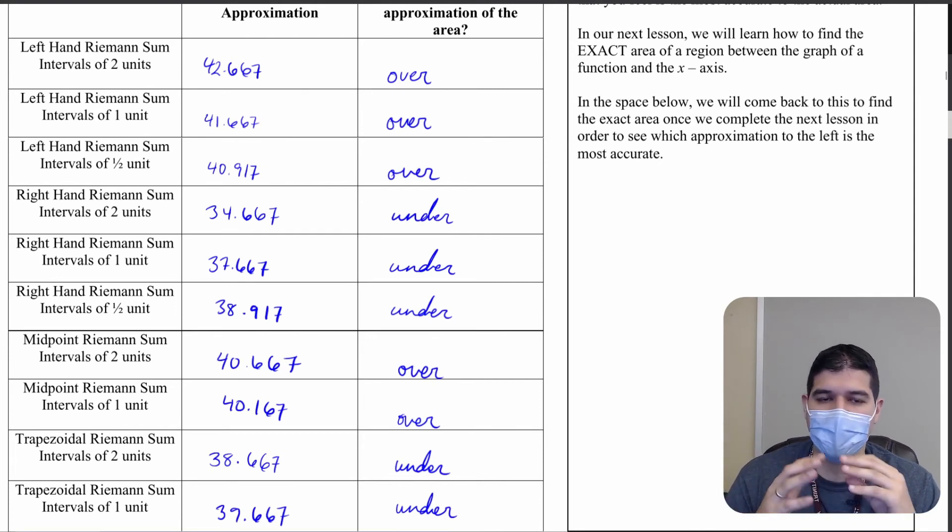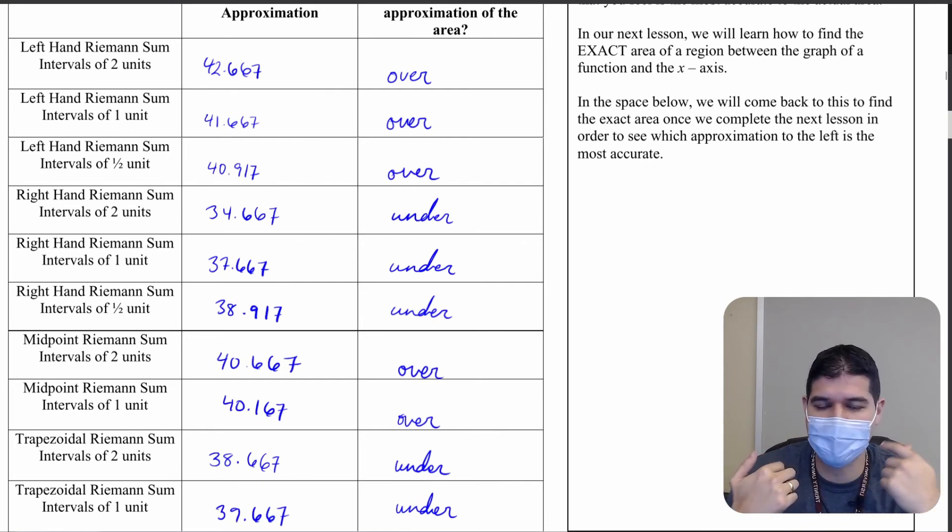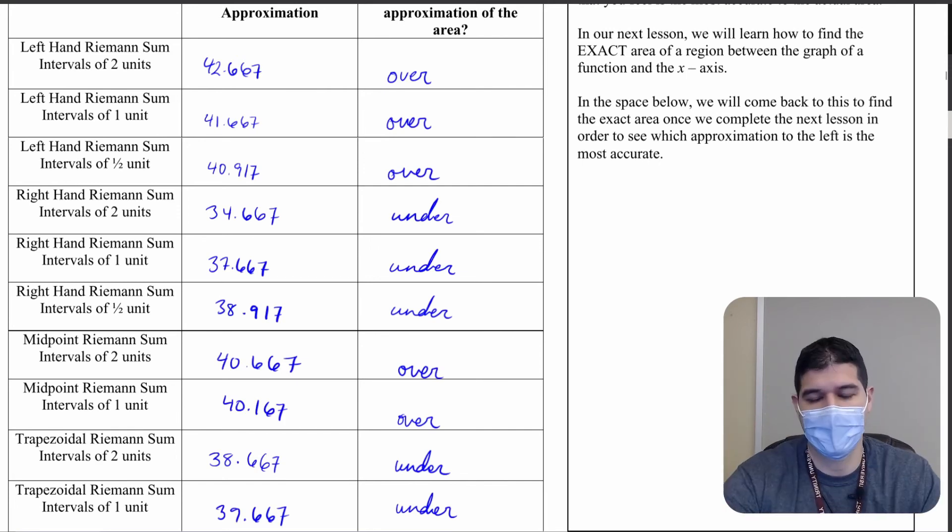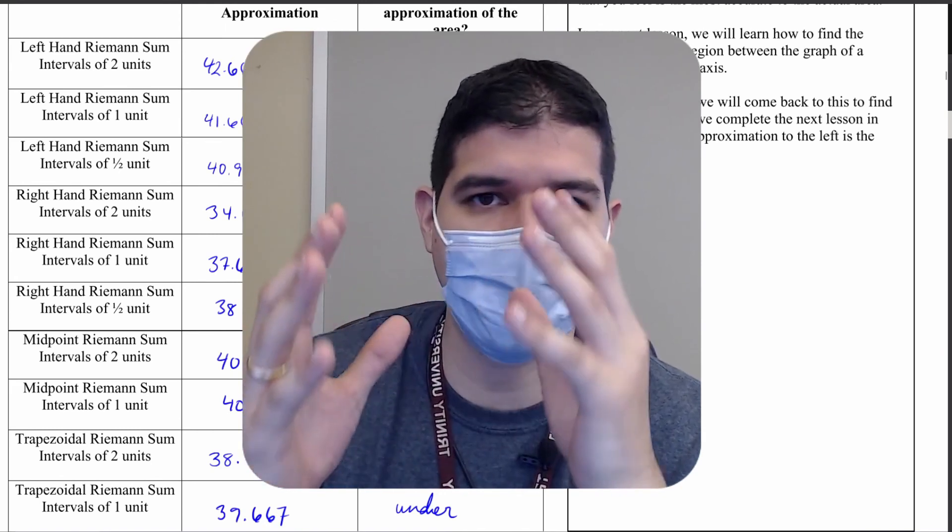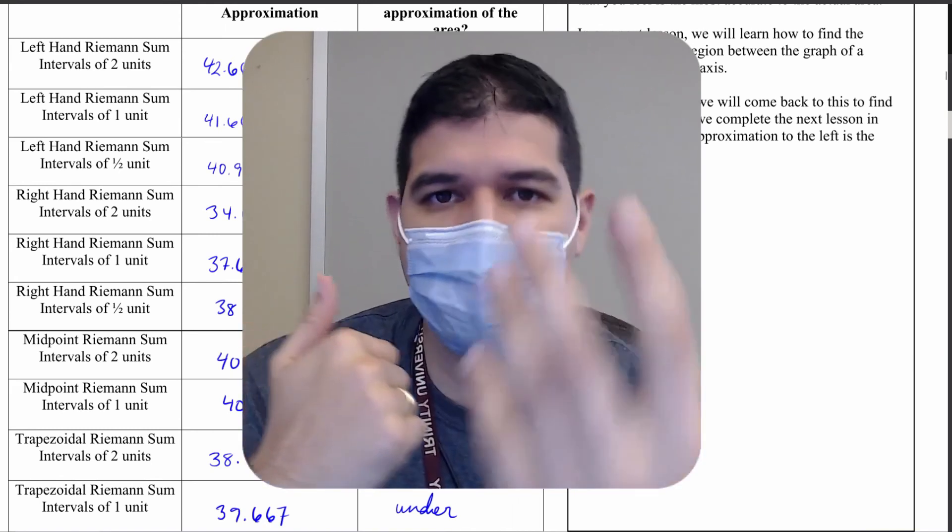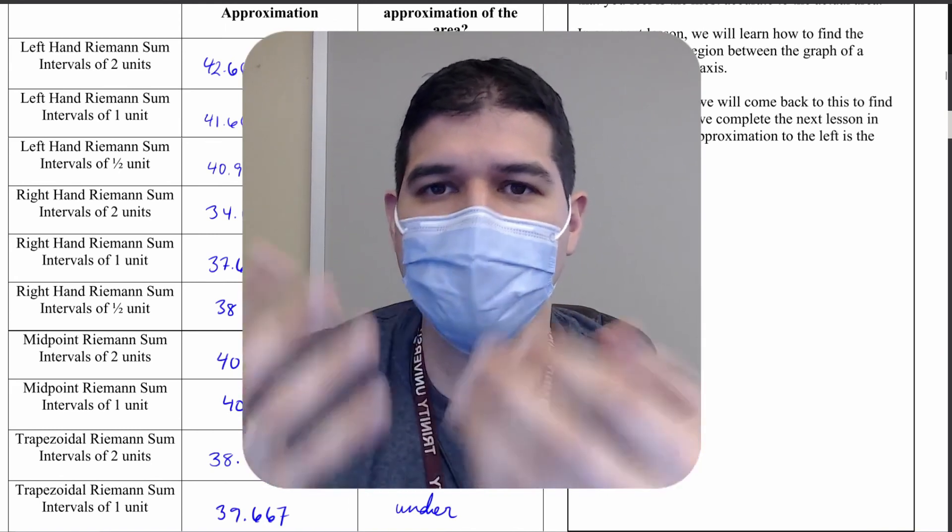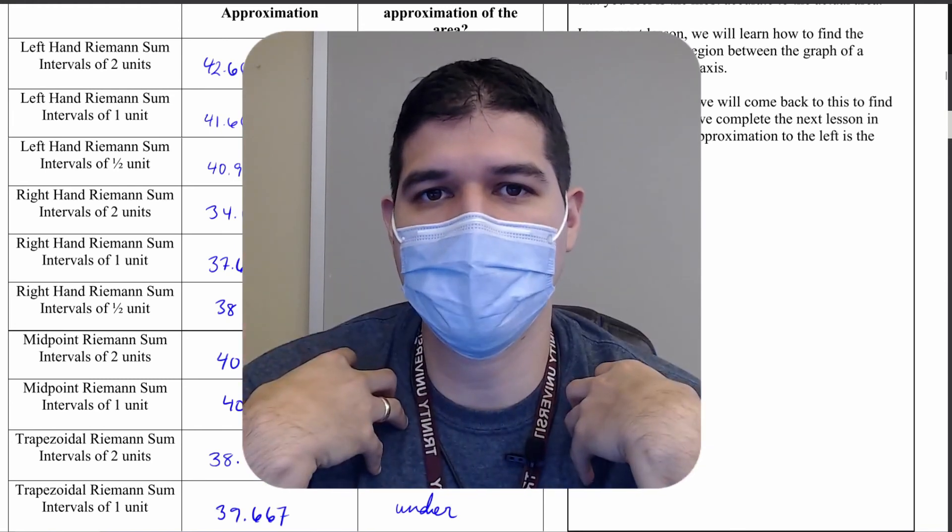In our next video what we're going to do is we're going to learn how to use Riemann sums but from tabular values. You're going to see how some of these calculations from the ideas that you have from these graphs are going to come into play. Of course, if you need any help with any of these values or if you're not sure how these trapezoidal sums are working out, please reach out to me. I'm Mr. Hernandez, this was Mr. Hernandez teaches.